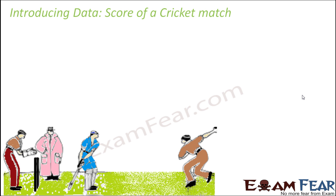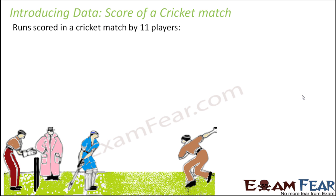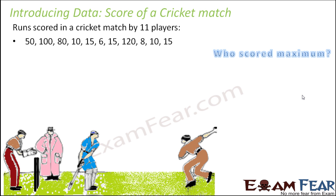Let's look at another example. Let's say there is a cricket match going on, and the runs scored by all 11 players are: 50, 100, 80, 10, 15, 6, 15, and so on. Even though this is a smaller dataset with just 11 numbers, if you ask which particular player scored the maximum runs, you need to compare all 11 numbers to find the biggest. And even then, if 120 is the biggest number, it is very difficult to say who scored 120 because no names are given. So these kinds of questions are difficult to answer from this kind of data.